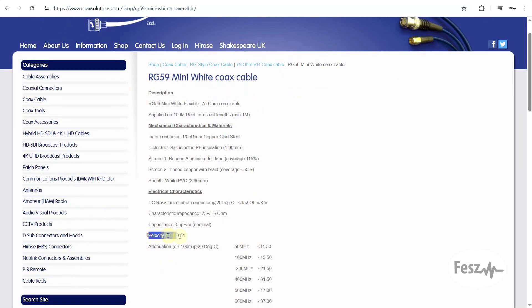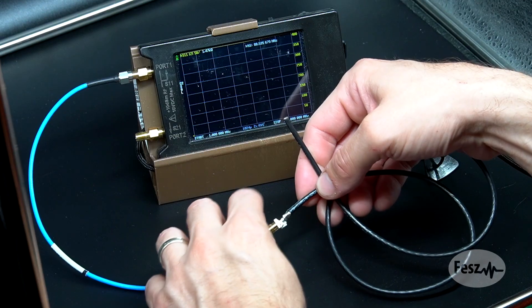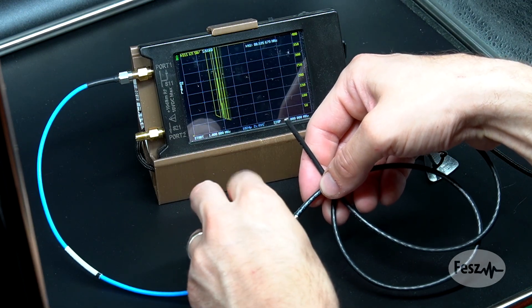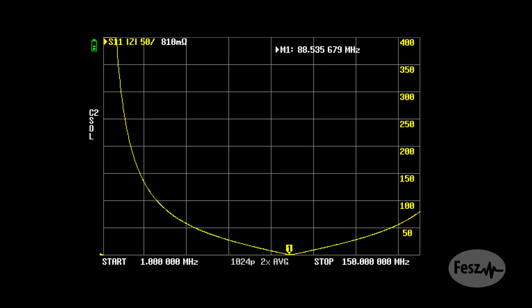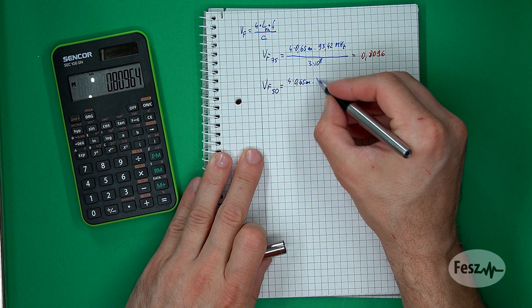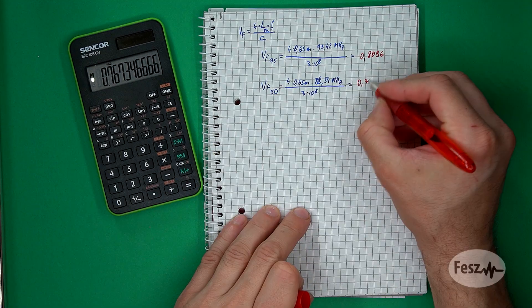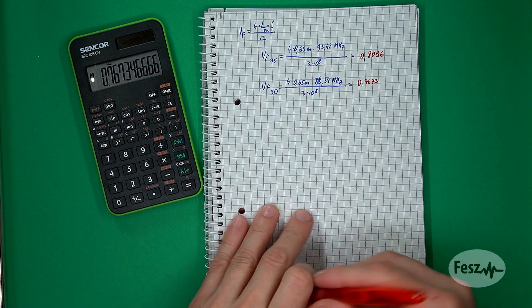While this value is present in the datasheet, it usually is documented with tolerances. To get the best results, it's better to double-check and measure your specific cable. In a similar fashion, I took a similar known length of my 50 ohm cable, again 65 cm, and got the minimal impedance value at 88.54 MHz. With this, if we run the numbers again, this will give us a velocity factor of 0.7673.